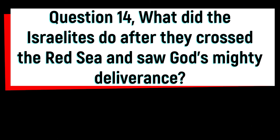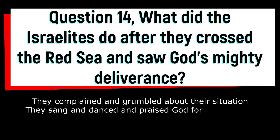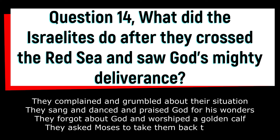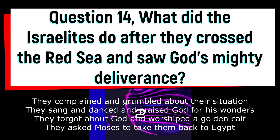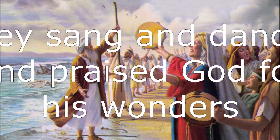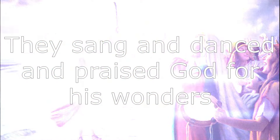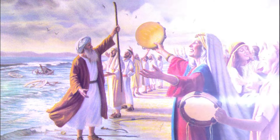Question 14: what did the Israelites do after they crossed the Red Sea and saw God's mighty deliverance? Did they complain and grumble about their situation? Did they sing and dance and praise God for his wonders? Did they forget about God and worship a golden calf? Or did they ask Moses to take them back to Egypt? The answer is they sang and danced and praised God for his wonders. The Israelites were so happy and grateful that they sang a song of praise to God, led by Moses and his sister Miriam. They also played tambourines and danced with joy.